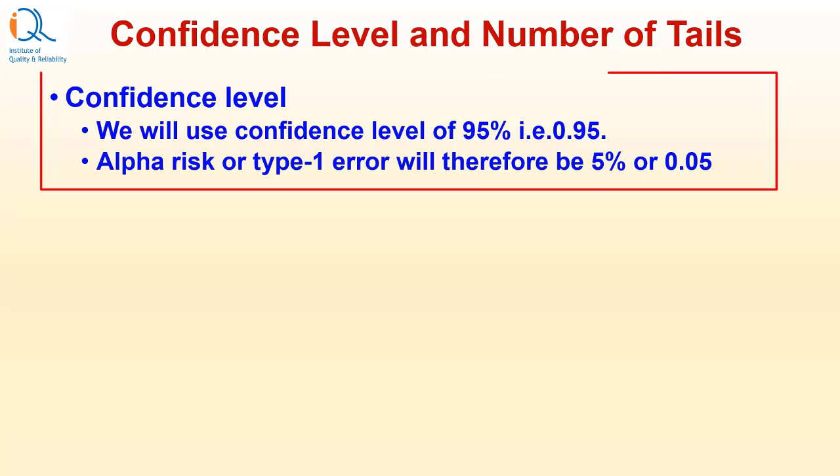Confidence level: We will use confidence level of 95% that is 0.95 which is used in most such decisions. As confidence level is 95%, alpha risk will be 5% or 0.05.